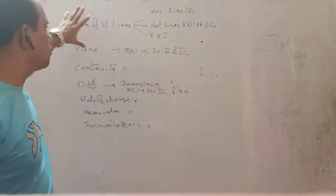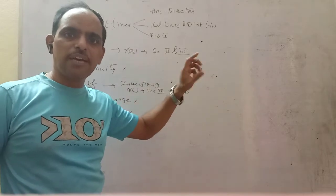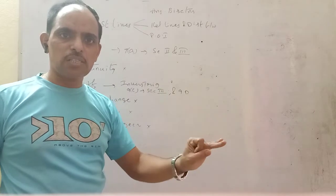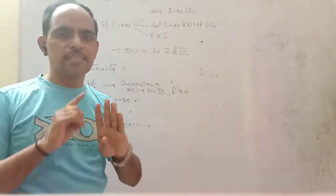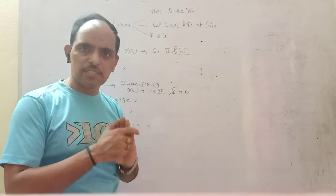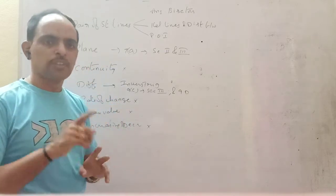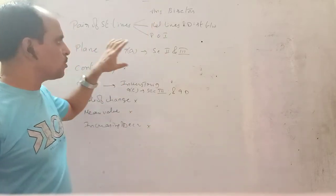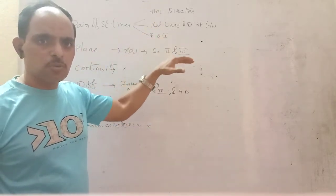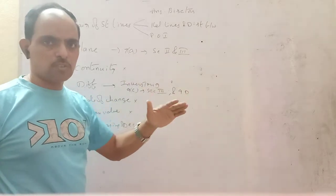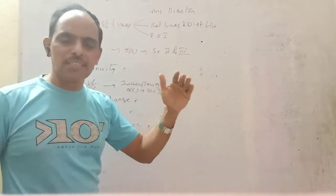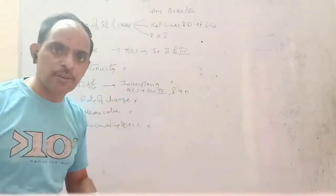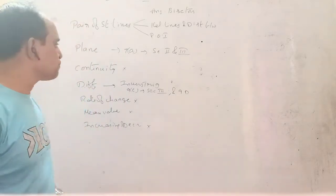So these are the contents reduced in the First Year 1B syllabus. To summarize the geometry section: coordinate system, locus, change of axis, and straight lines are completely to be studied. In pair of straight lines, three concepts are removed. In 3D planes, exercise 7A sections 2 and 3 are removed. These reductions apply to the 2021 intermediate exam — remember that.